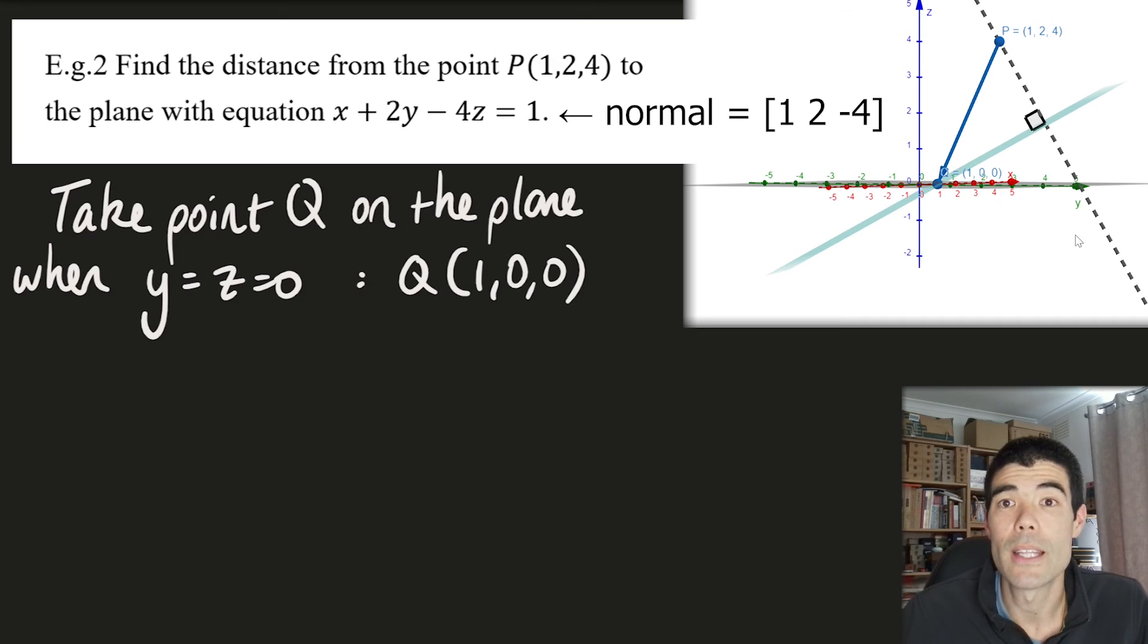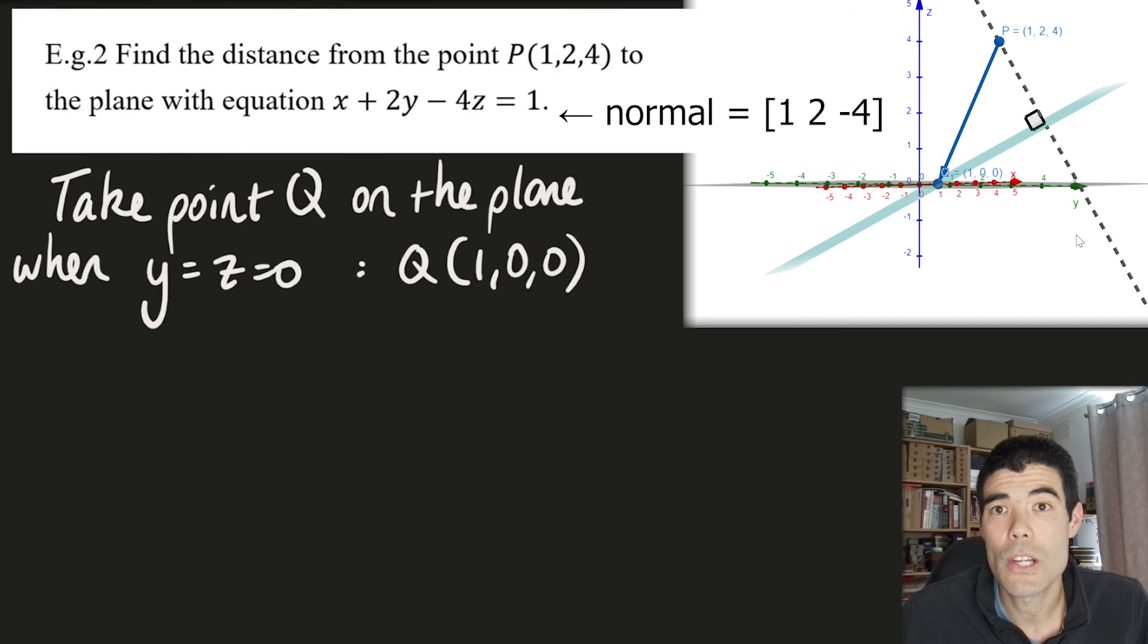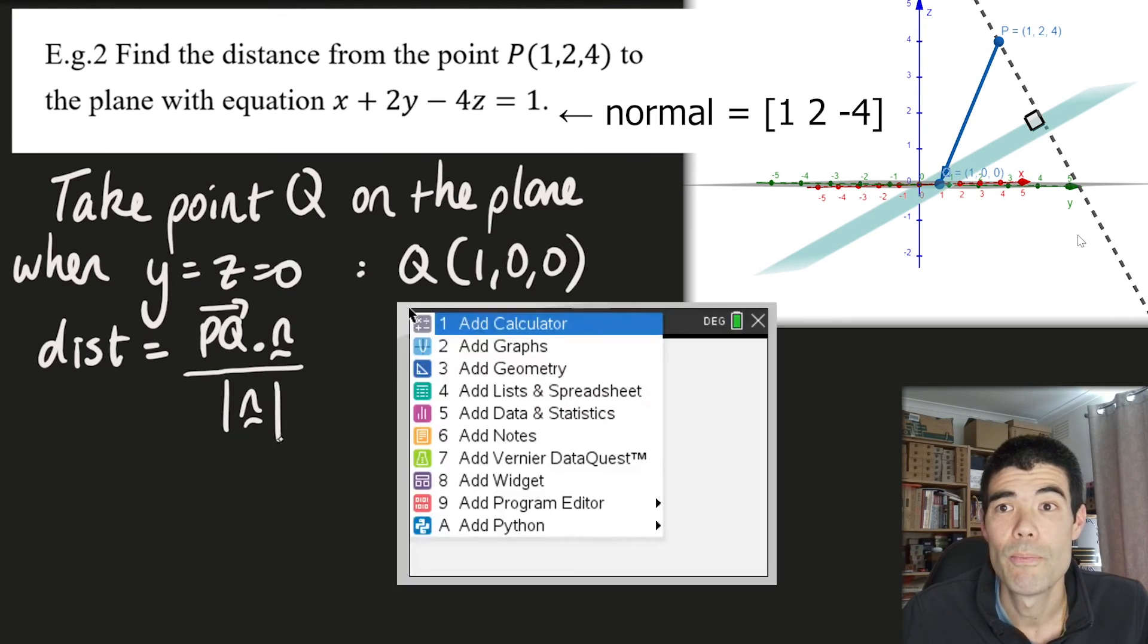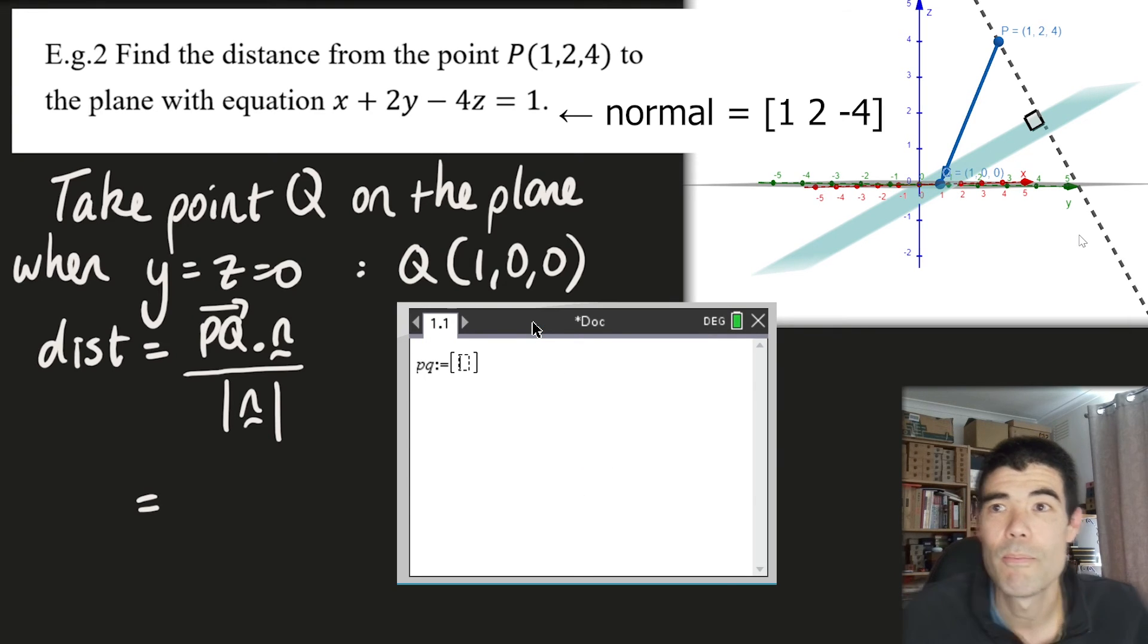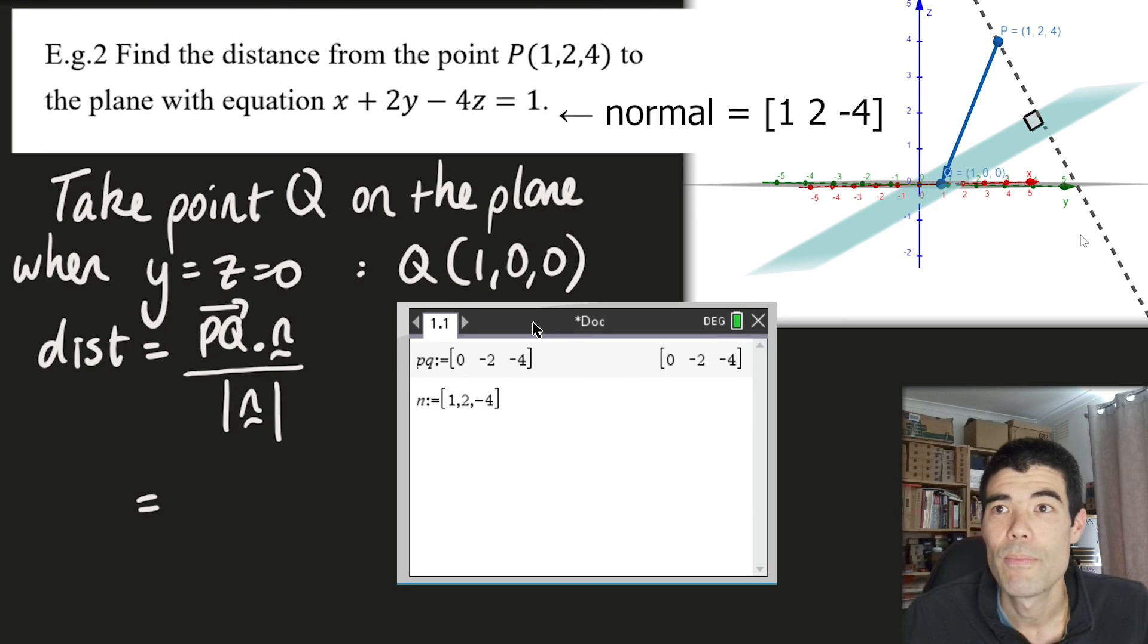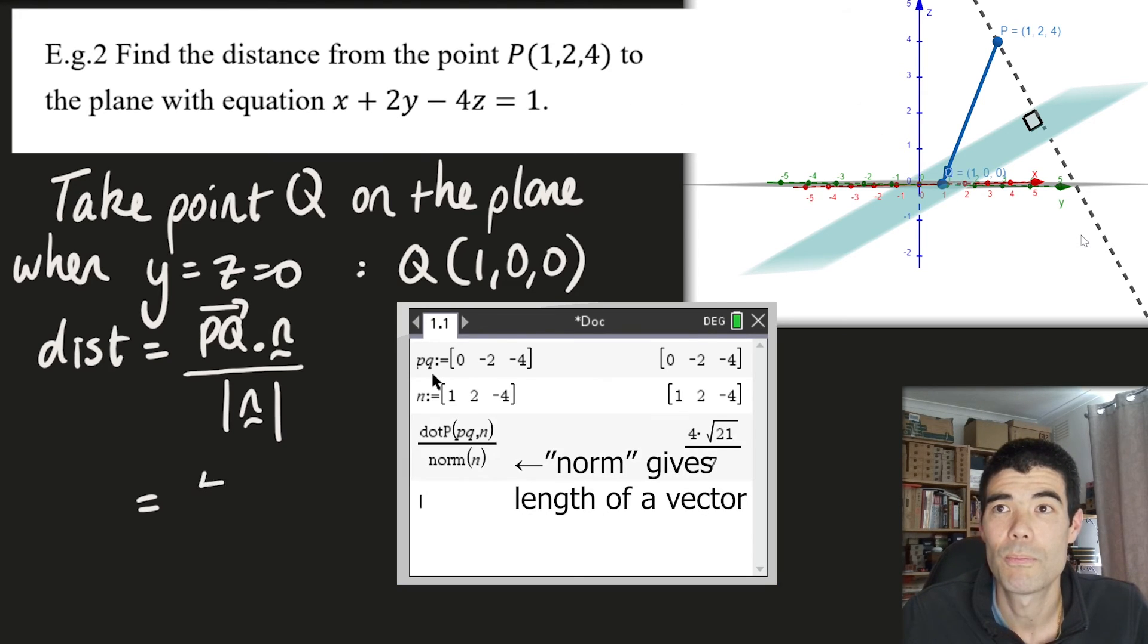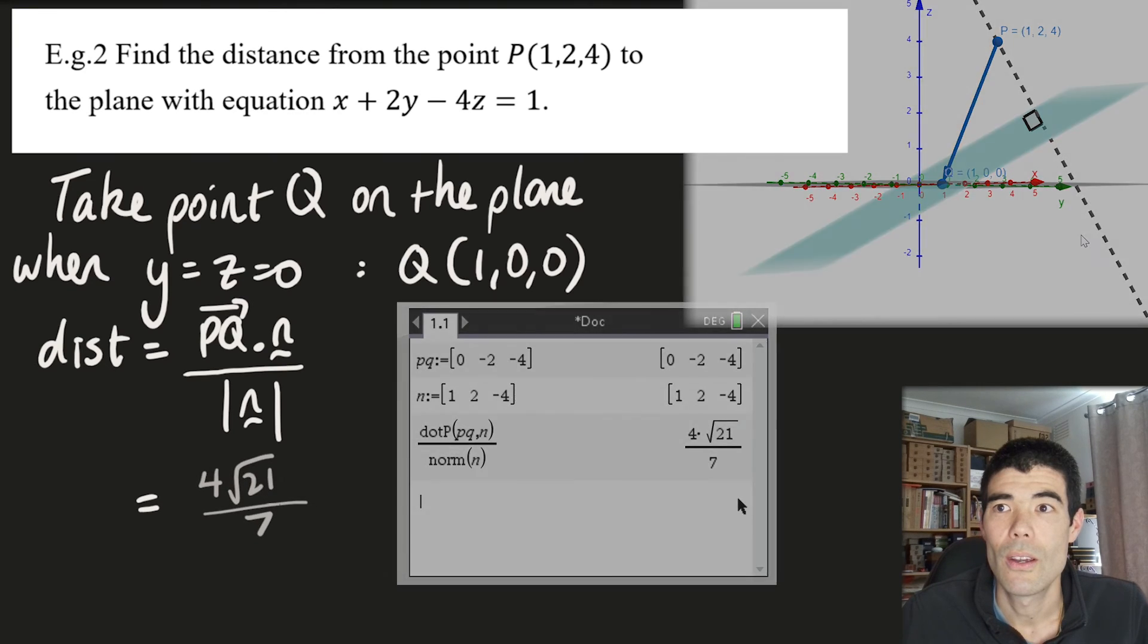Then what we want to do is find the distance. So the vector projection, what we want really is the scalar projection. So if we use our scalar projection formula, we want the projection of PQ onto the normal vector. Again, really easy to calculate on the calculator, just define p, q, define n. And we'll get our distance, shortest distance from the point to the plane.